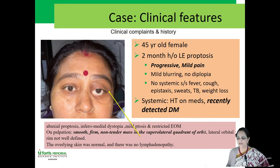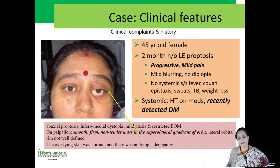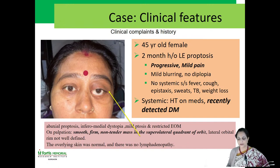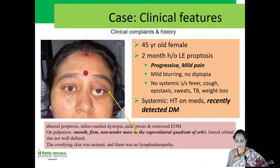The case is a 45-year-old female presenting with a two-month history of left eye proptosis, progressive, with associated mild pain. No diplopia, mild blurring, and no systemic symptoms like fever, cough, epistaxis, sweats, no history of TB, weight loss, or anorexia. She is hypertensive on medication and recently detected as diabetic. On examination: abaxial proptosis with inferior medial dystopia, mild ptosis, restricted extraocular movements, smooth firm non-tender mass in the superolateral quadrant of the orbit with lateral orbital rim poorly defined. Overlying skin normal, no lymphadenopathy.